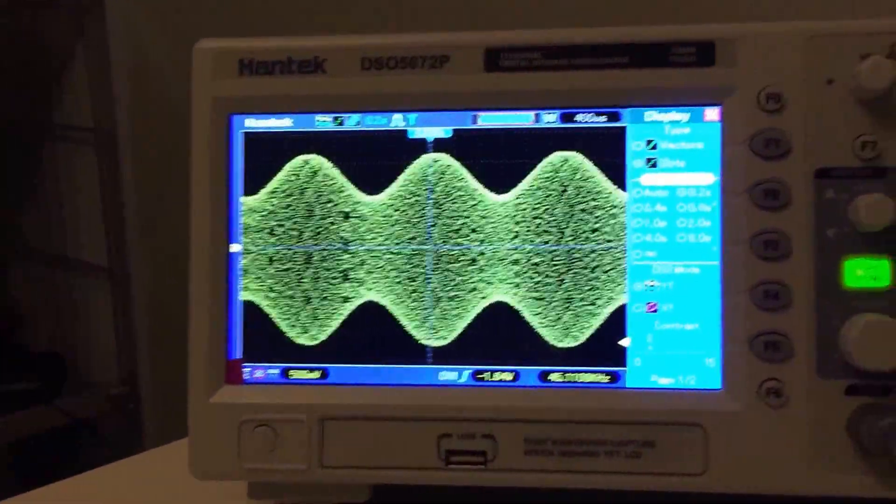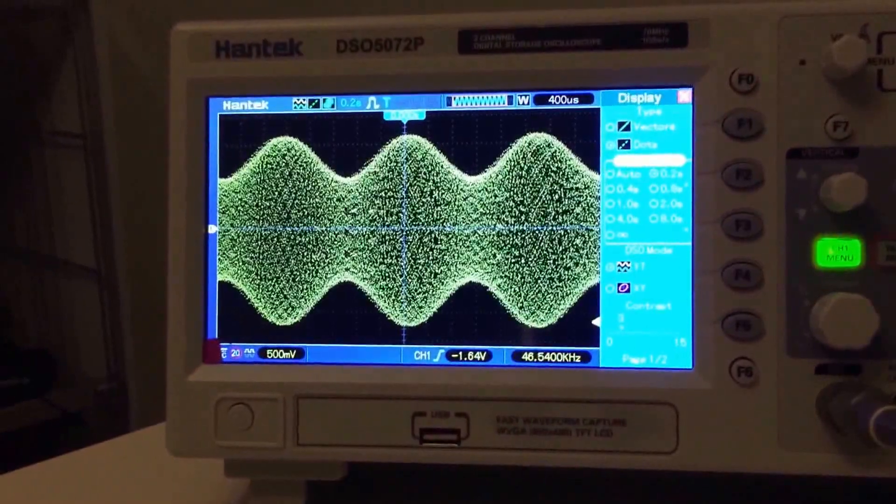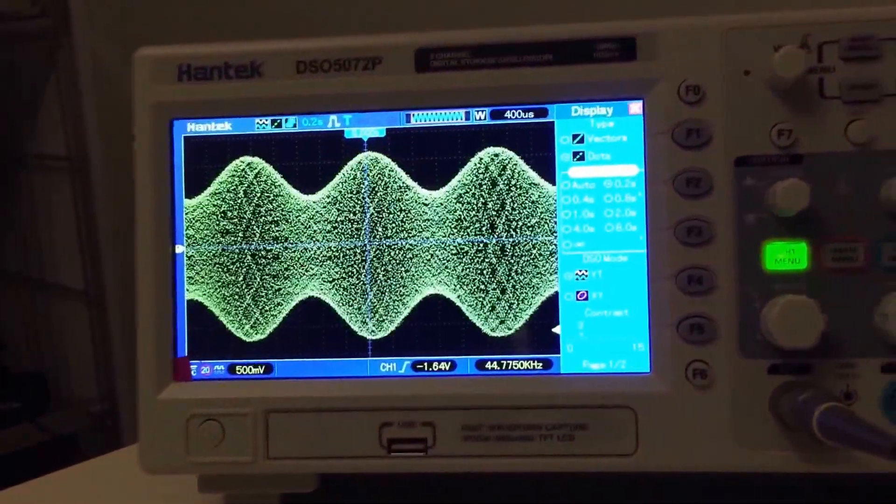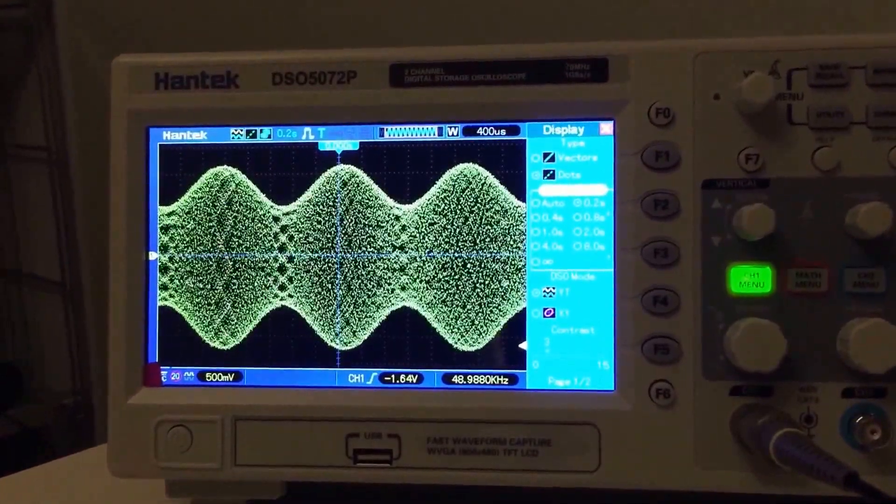So there it is. There is a modulated AM signal at, what is it, three megahertz displayed on the Hantek 5072P. Thanks for watching.